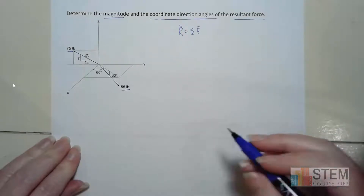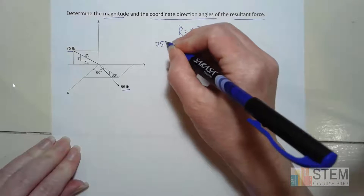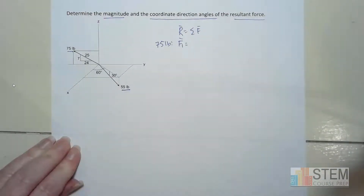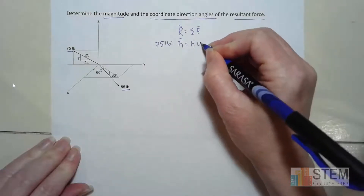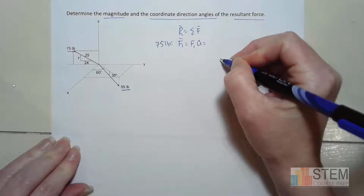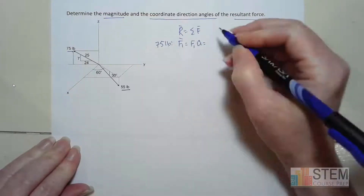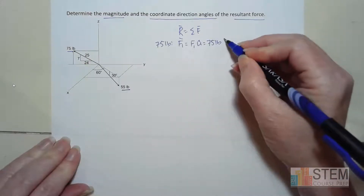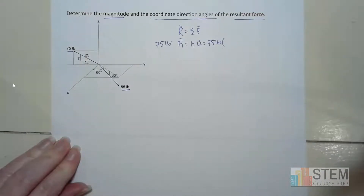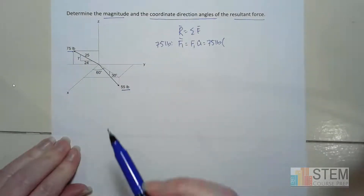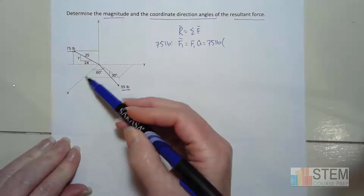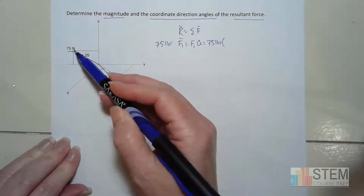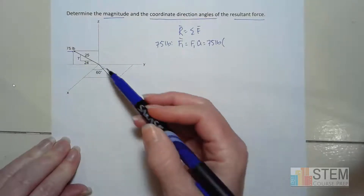So first thing we're going to do is get our forces, starting with this 75 pounds — I'll call it F1. We need the magnitude of the force times our unit vector. The magnitude is 75 pounds. The unit vector tells me the direction my force is pointing. This force lies in the YZ plane — we know that because it has a rectangle in that YZ plane — so we don't have to worry about X here.